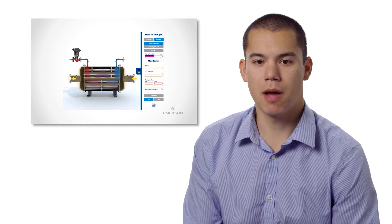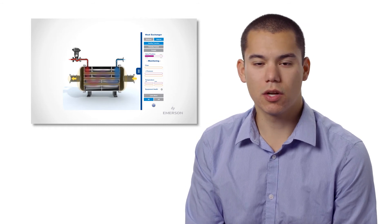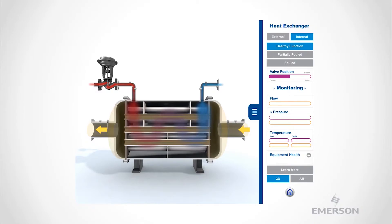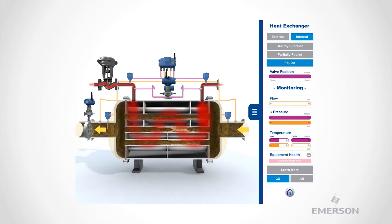The first step to Emerson's heat exchanger monitoring solution is to collect real-time data about heat exchangers. Temperature, flow, and differential pressure are all key measurements that can be captured using Emerson technology. PlantWeb Insight then gathers and analyzes the raw data to determine the overall health of a heat exchanger using pre-engineered algorithms and expertise. This includes whether the heat exchanger is experiencing fouling.